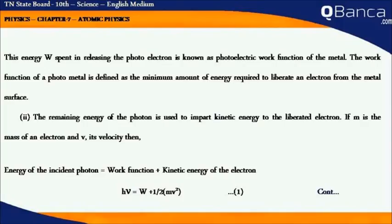The second way: the remaining energy of the photon is used to impart kinetic energy to the liberated electron. If m is the mass of an electron and v its velocity, then the energy of the incident photon equals the work function plus the kinetic energy of the electron.